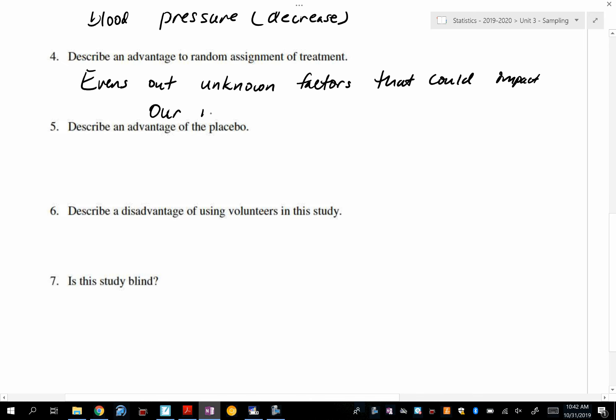So the phrase that I like to use is it evens out unknown factors that could impact our results. Think about stress causing blood pressure to go up. Do we know the occupations for these 90 people? No. People might have high stress or low stress jobs. You're going to find out when you have your job, sometimes you have low stress periods and then high stress periods. We don't know what's going on in their lives that could affect the blood pressure results.